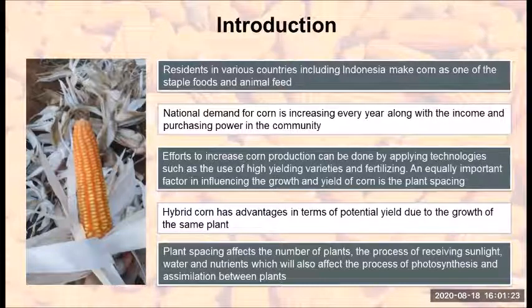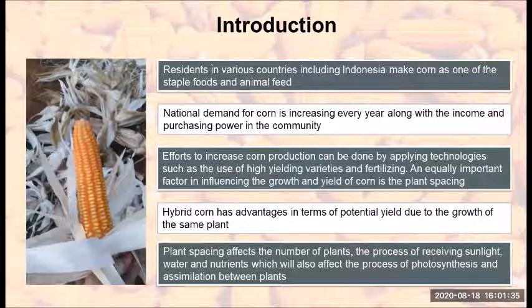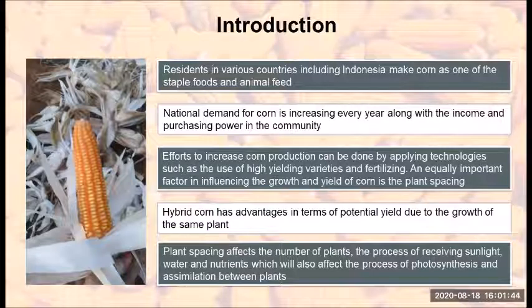An equally important factor in influencing the growth and yield of corn is the plant spacing. Hybrid corn has advantages in terms of potential yield and growth. Plant spacing affects the number of plants in the process of receiving sunlight, water, and nutrients, which will also affect the process of photosynthesis and assimilation between plants.